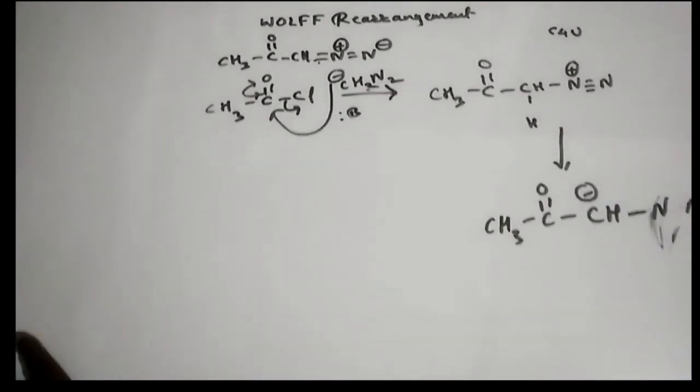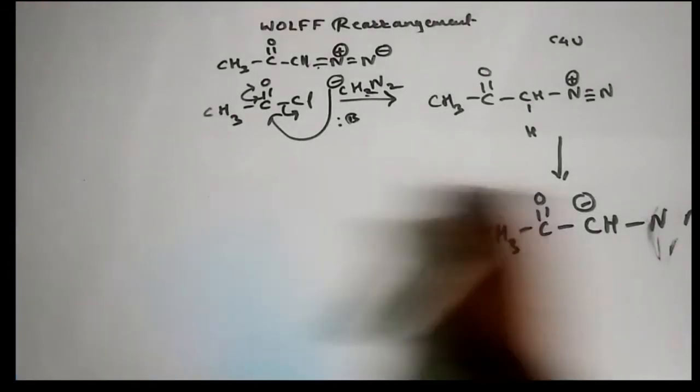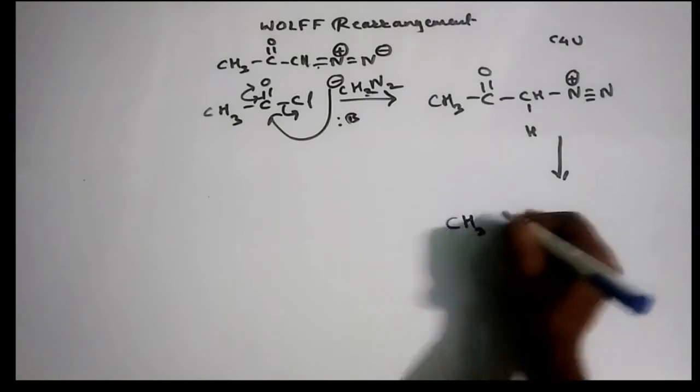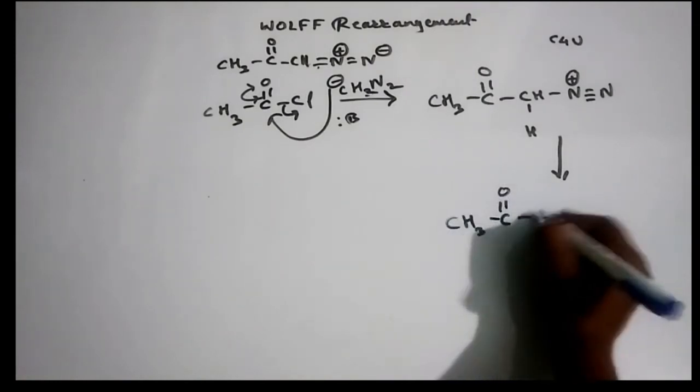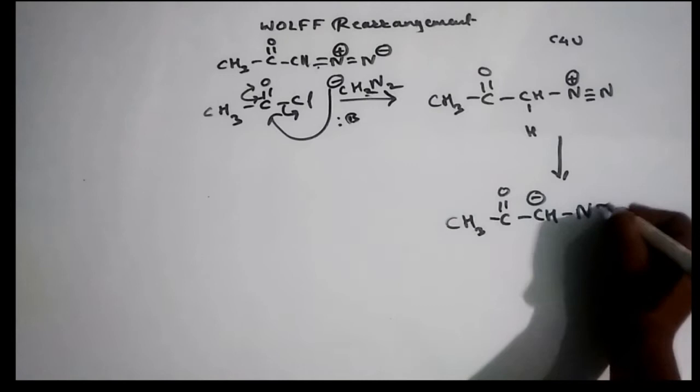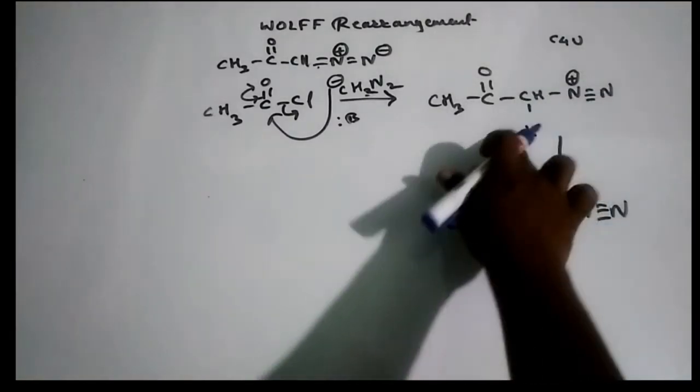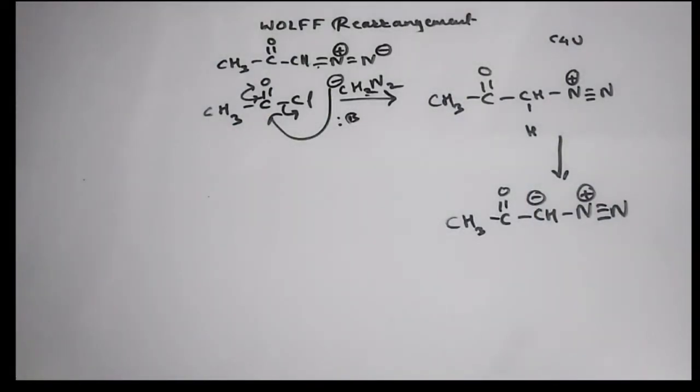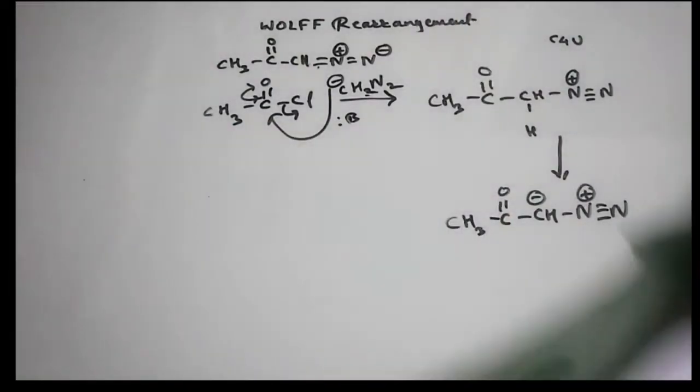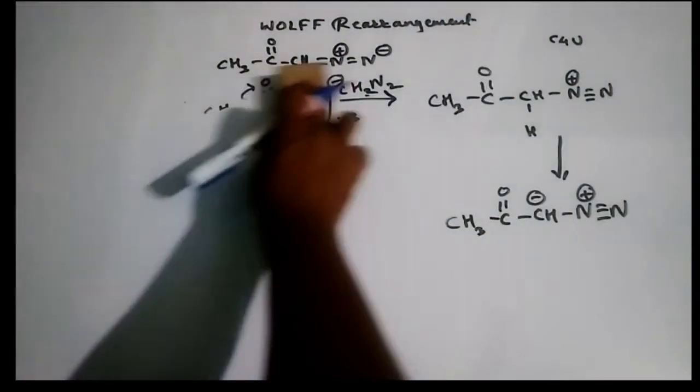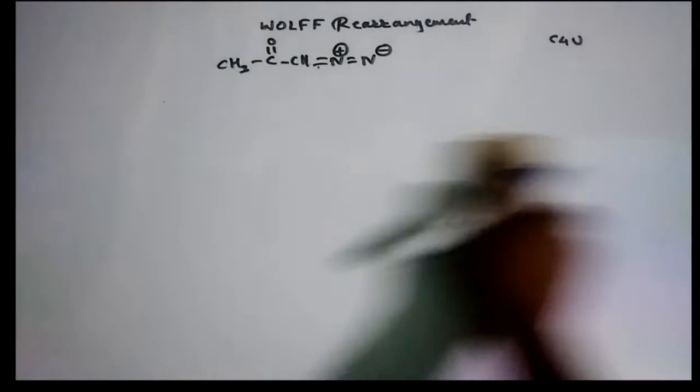I hope this is visible to you. I'll write it here. C double bond O, CH minus N triple bond N plus, where this proton is going to be taken by the base itself. So this is how you are getting diazo ketone. Now we have to remember these two structures, there shouldn't be any confusion. So I'll write the structure again.